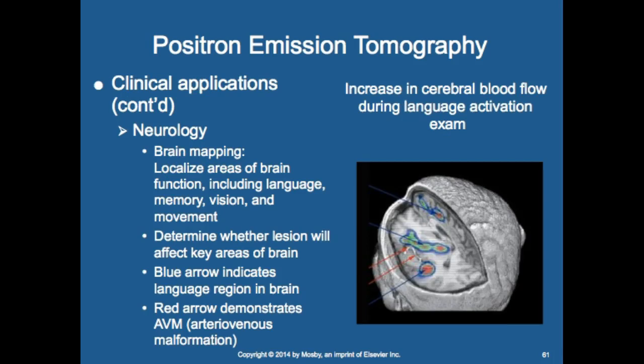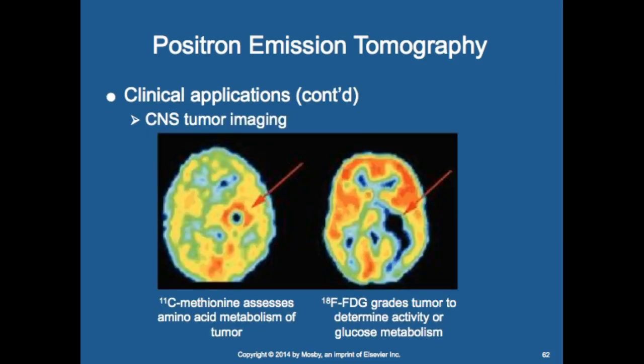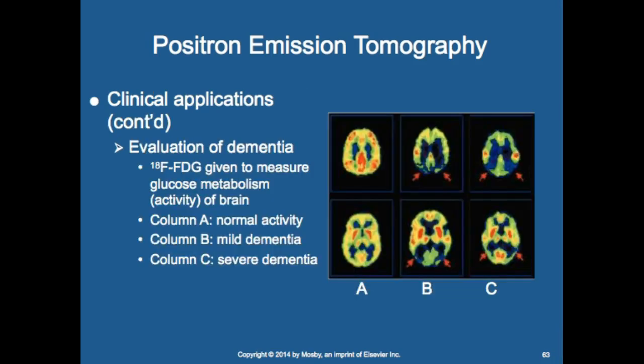For brain mapping, PET localizes areas of brain function including language, memory, vision, and movement. It determines whether a lesion will affect key brain areas. The blue arrow indicates the language region and the red arrow demonstrates an AVM. For CNS tumor imaging, methionine assesses amino acid metabolism, while FDG grades tumor activity or glucose metabolism.